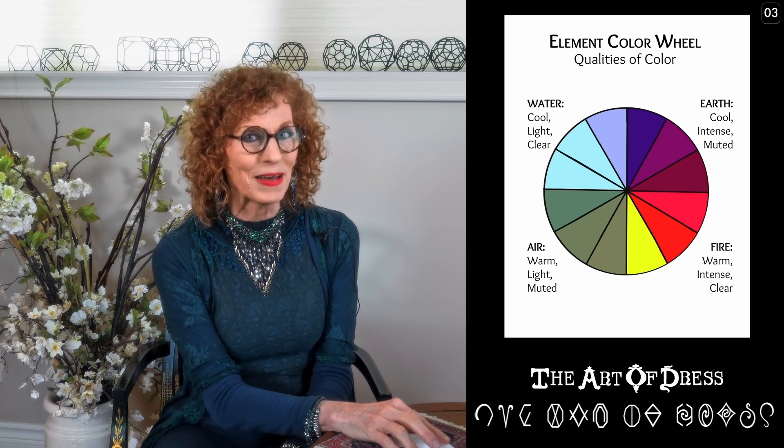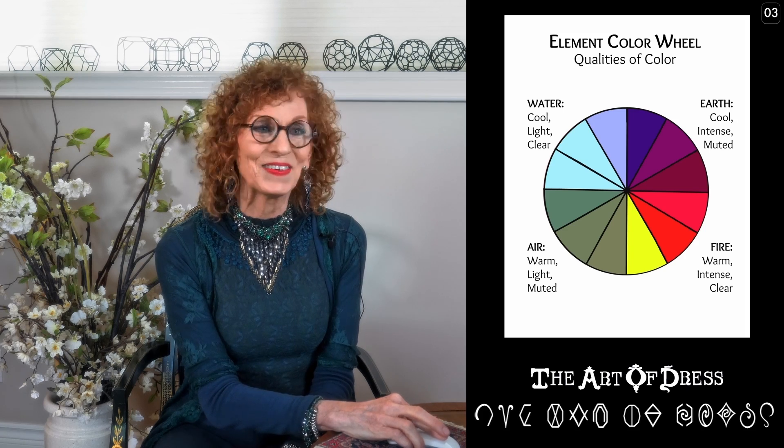I'm going to give you two examples from each quadrant — eight examples total — showing how length, volume, and texture work together with the part, bang, and silhouette. Let's start with earth coloring. Here we have Leah Kabedi, who has plum earth coloring. Her length is medium-long, her volume is high, and her texture is also medium-high.